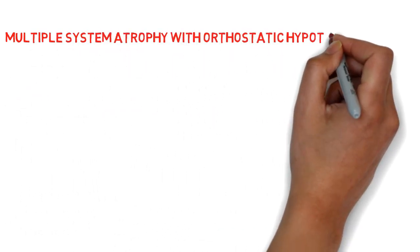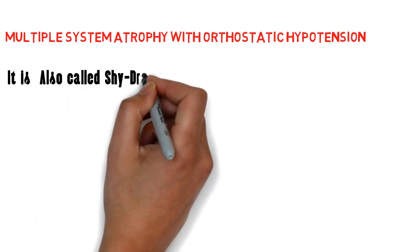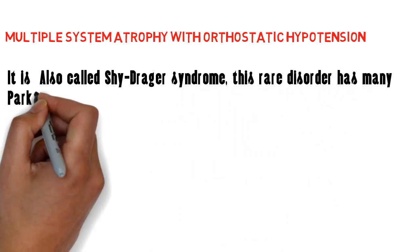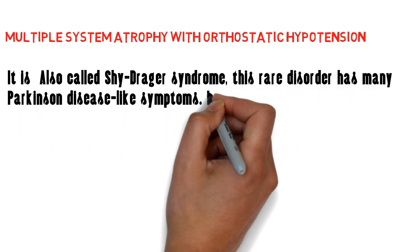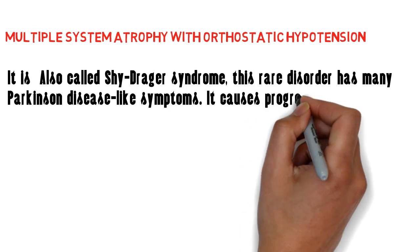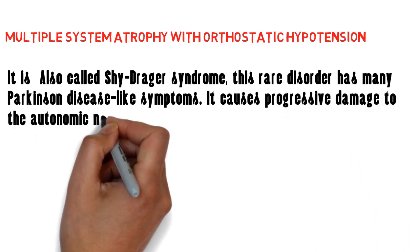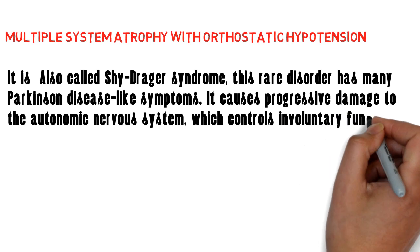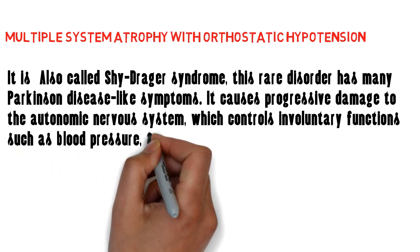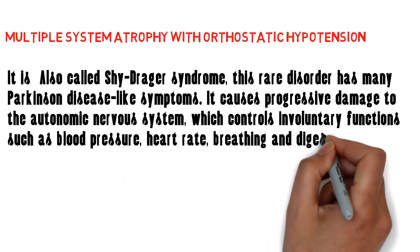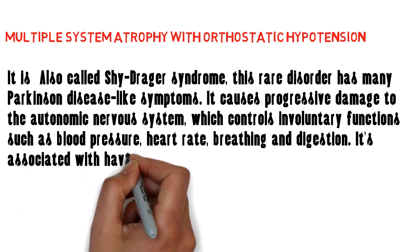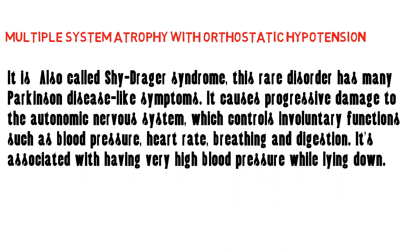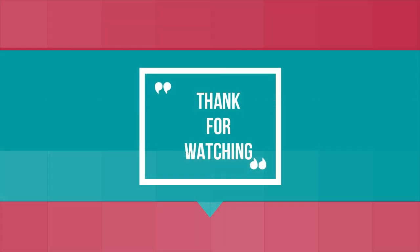Multiple system atrophy with orthostatic hypotension, also called Shy-Drager syndrome, is a rare disorder with many Parkinson's disease-like symptoms. It causes progressive damage to the autonomic nervous system, which controls involuntary functions such as blood pressure, heart rate, breathing, and digestion. It is associated with having very high blood pressure while lying down.